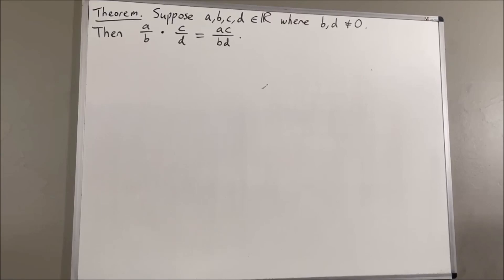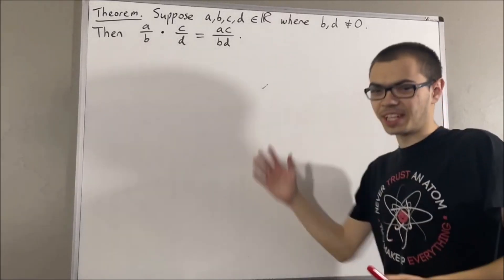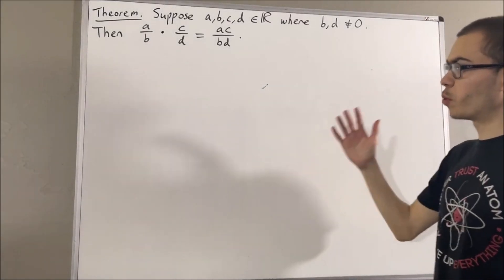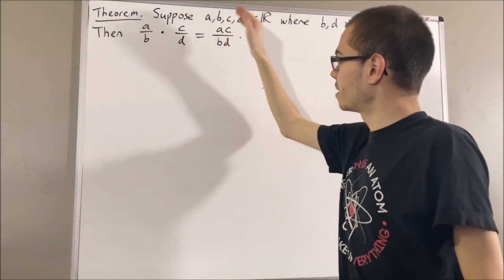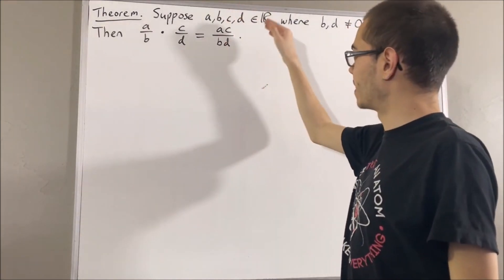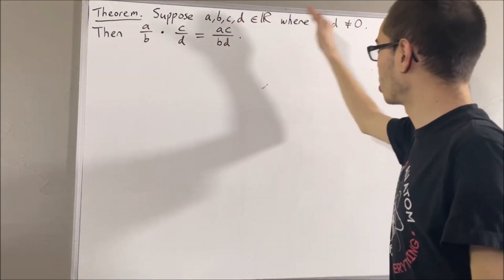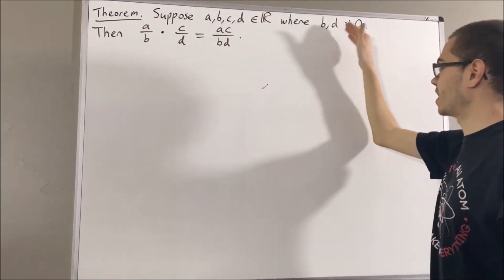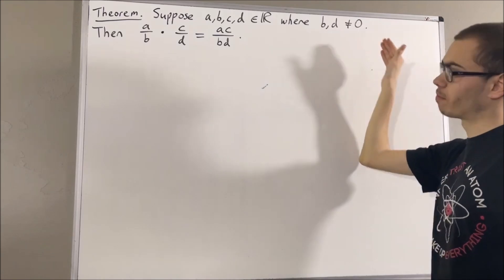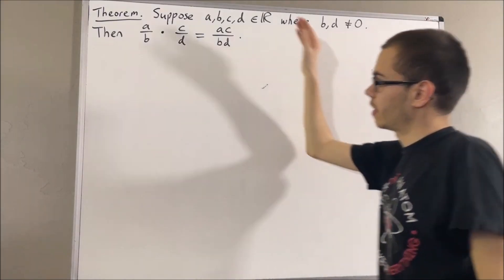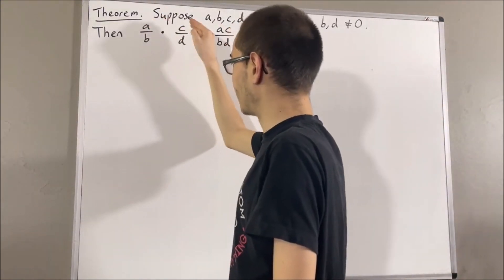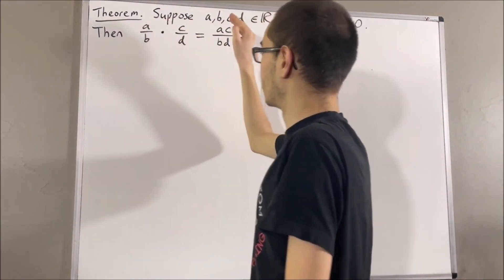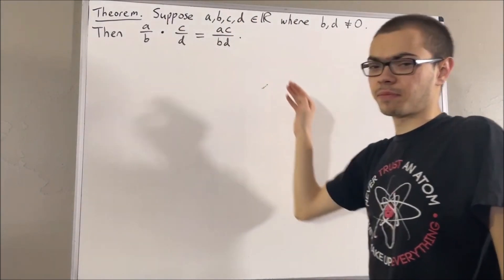Hello! In this video, we are going to prove the following theorem. Suppose A, B, C, and D are real numbers, where B and D are non-zero. Then A over B times C over D is equal to AC over BD.